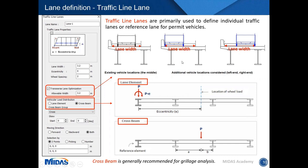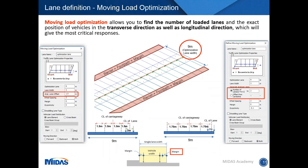Another way to define traffic lanes is to define the whole carriageway using moving load optimization. You simply define the total carriageway width and specify lane width parameters, and the software automatically determines the number of lanes and places them depending on what output is required. This is a very useful feature where you don't have to define individual lanes.